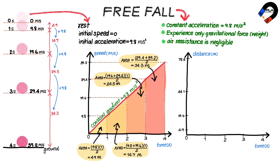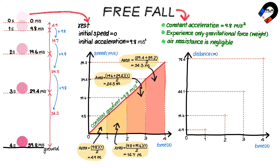For the distance-time graph of free fall, the distance traveled increases at an increasing rate because the ball's speed increases. At one second the distance is 4.9 meters; at two seconds it is 4.9 plus 14.7, equal to 19.6 meters; at three seconds it is 19.6 plus 24.5, equal to 44.1 meters; and at four seconds it is 44.1 plus 34.3, equal to 78.4 meters.